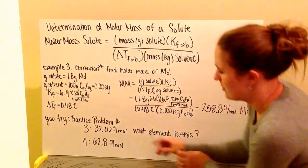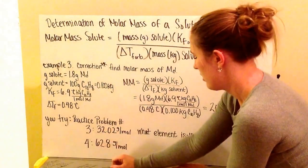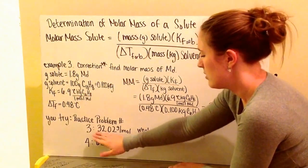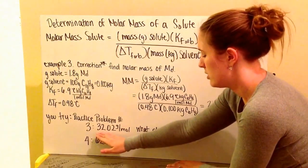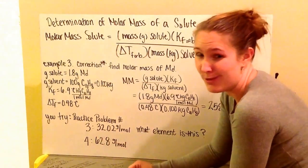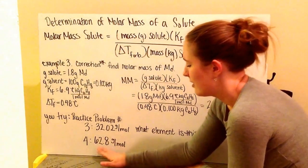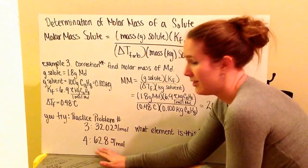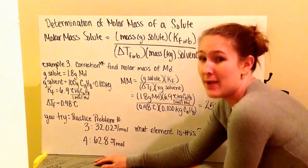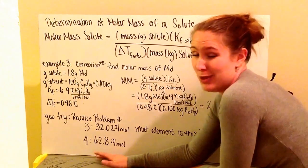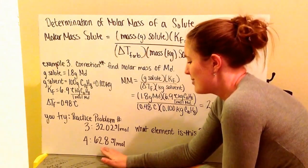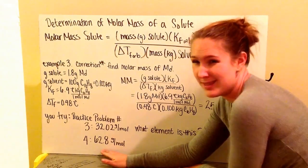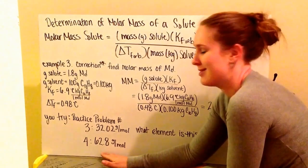Go ahead now and try practice problems 3 and 4. For practice problem number 3, you should get 32.02 grams per mole - check to see what element that is. For number 4, you should get 62.8 grams per mole. Now this isn't an element. Solutes can be compounds like sodium chloride, so you might want to see what this compound is.